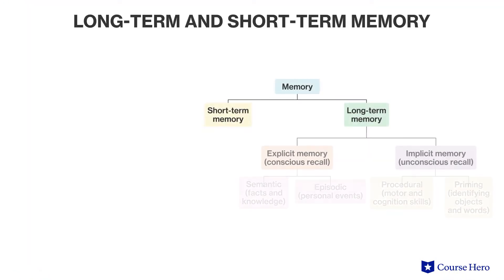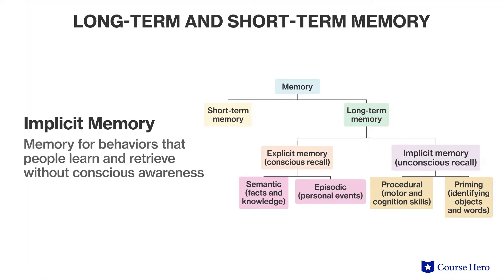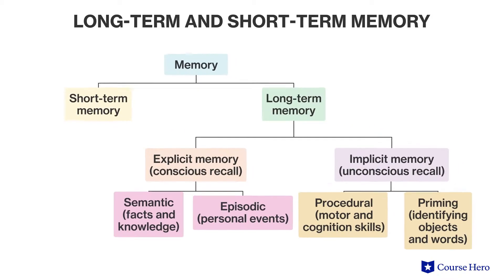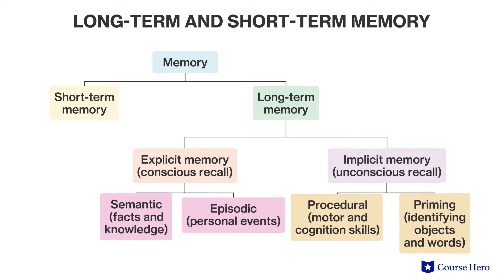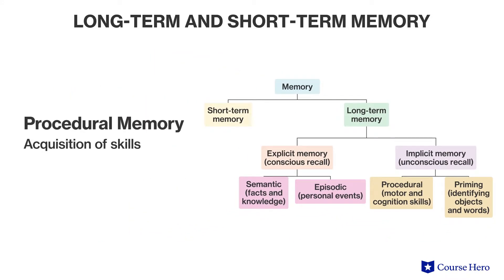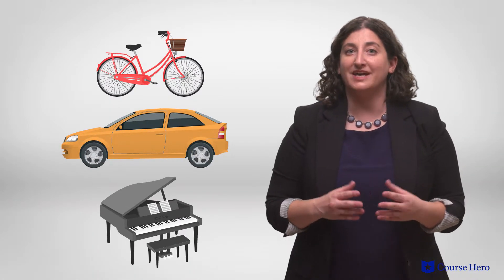Implicit memory refers to memory for behaviors that people learn and retrieve without conscious awareness. There are two types of implicit memory: procedural memory and priming. Procedural memory involves the acquisition of skills, like knowing how to ride a bike, drive a car, or play piano.